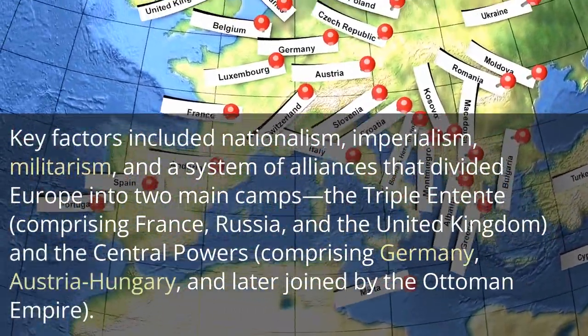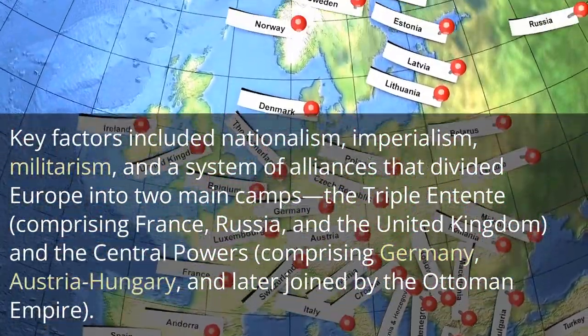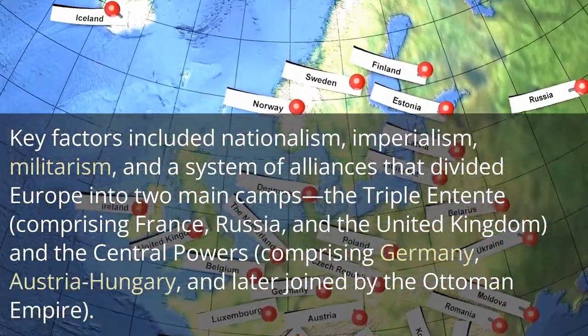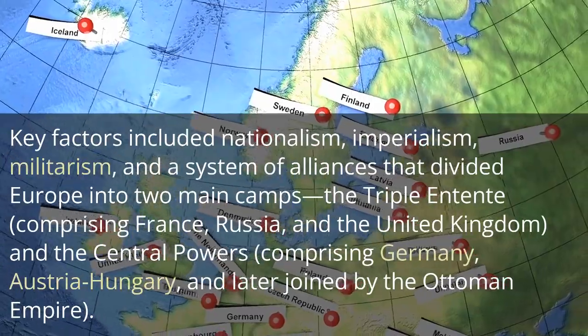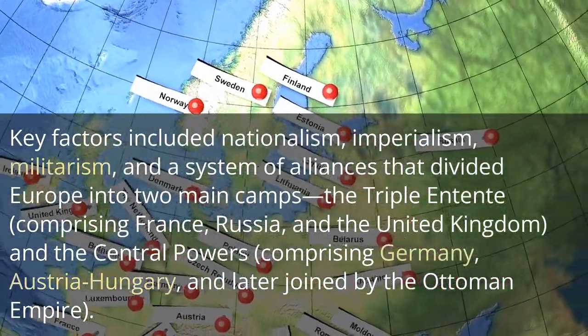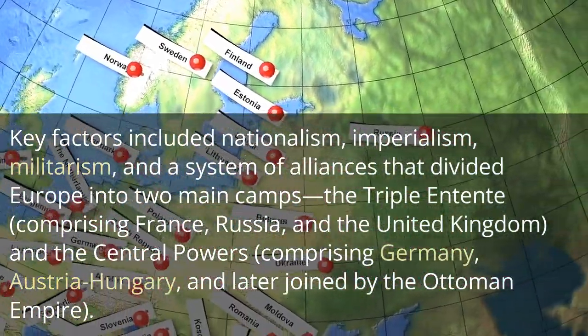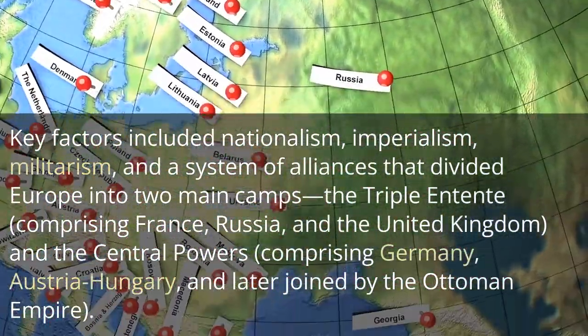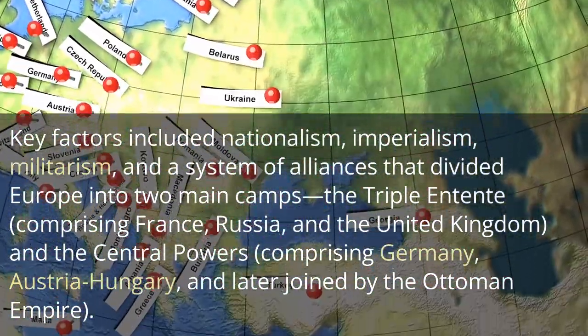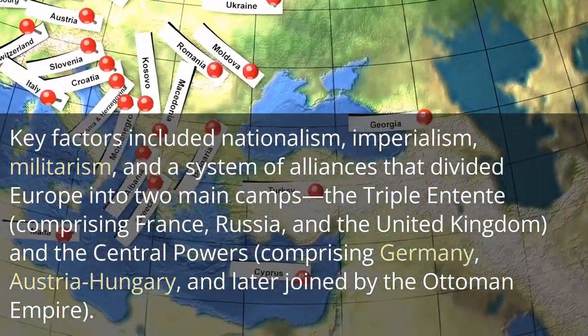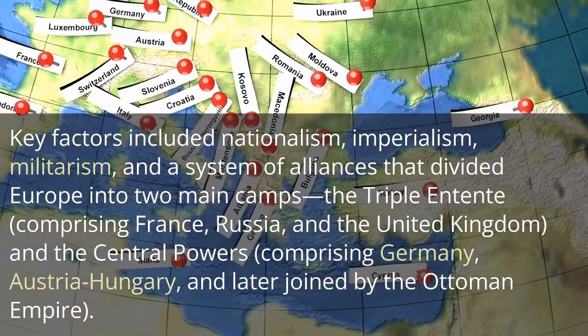The Triple Entente, comprising France, Russia, and the United Kingdom, and the Central Powers, comprising Germany, Austria-Hungary, and later joined by the Ottoman Empire.